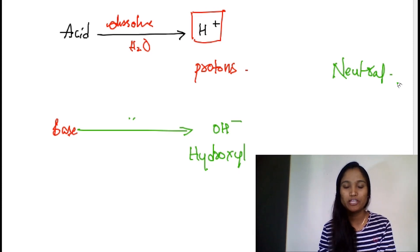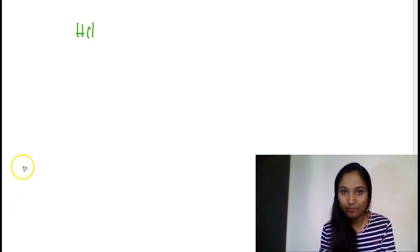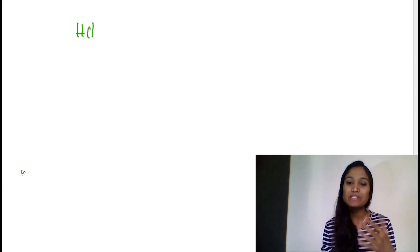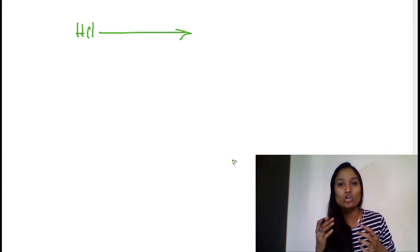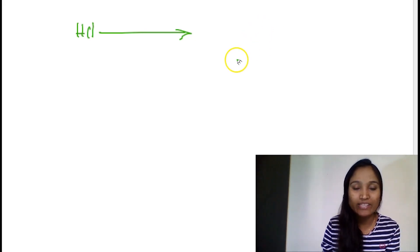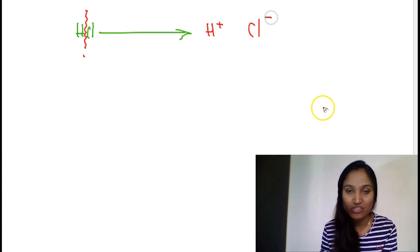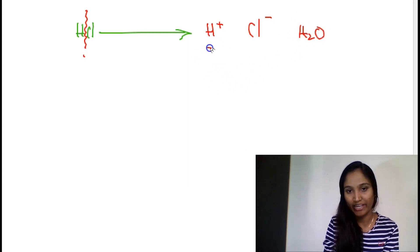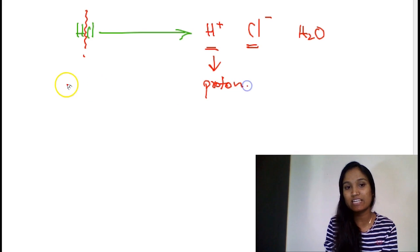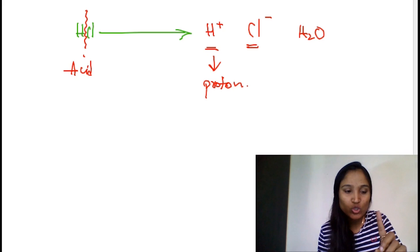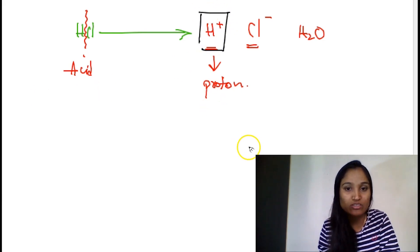Examples of acids and bases. Let's take HCl. It's called as hydrochloric acid. Chemistry depends on equations. After dissolving into water, H2O, HCl is giving you H plus and Cl minus. According to the definitions, if something gives you H plus or proton, you can call it as an acid. Absolutely yes, this is an acid.